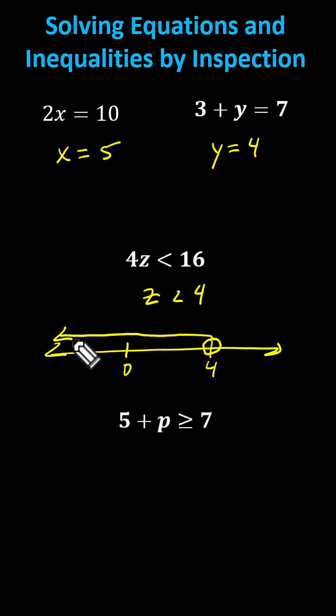Next, we have 5 plus p greater than or equal to 7. Notice if p was equal to 2, we'd have 5 plus 2, which equals 7, which in this case does satisfy the inequality.